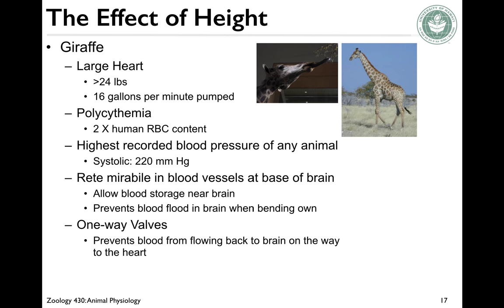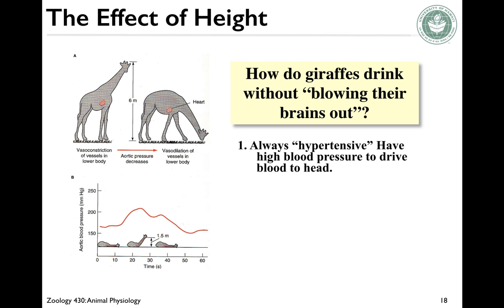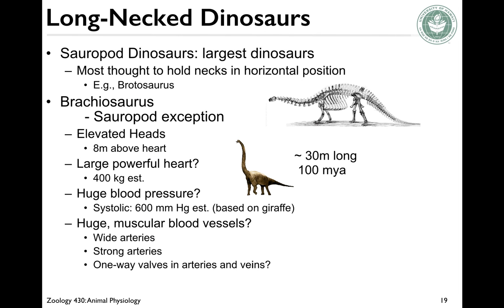Giraffes also have one-way valves that prevent blood from flowing back to the brain on the way to the heart. How do giraffes drink without blowing their brains out? They're hypertensive — they have high blood pressure to drive blood to the head. They also have what amounts to G-suits: their skin and tissue in their legs push blood towards the head. What they do is spread their forelegs apart and dilate their vessels in their legs when they drink, and valves prevent backflow into the brain.